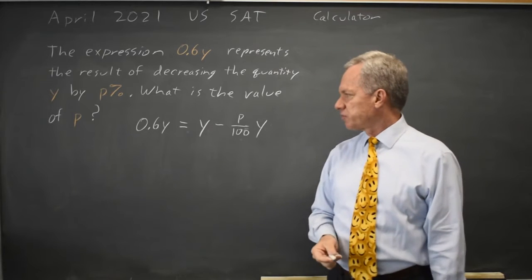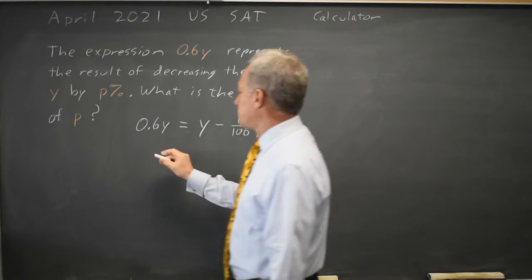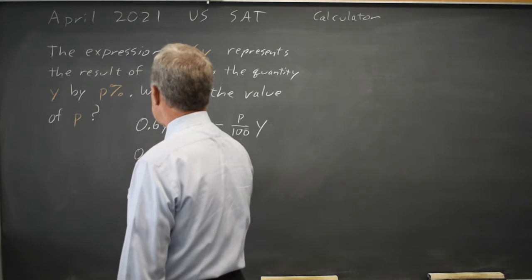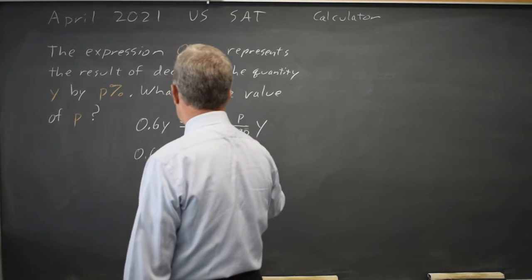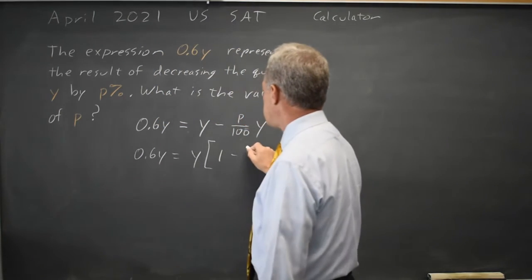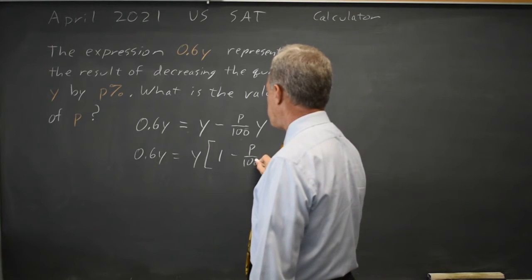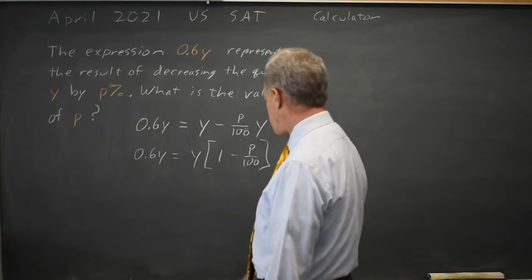And they're asking us to solve this for P. So this is 0.6Y equals Y times 1 minus P over 100, factoring out the common factor of Y.